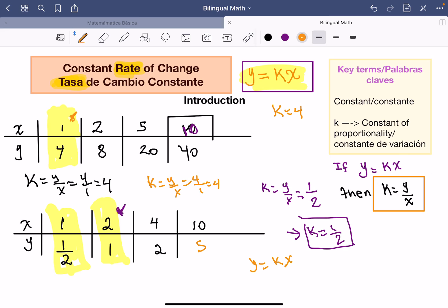Pero ya sabemos que la k es igual a 1 medio, por lo tanto, y es igual a 1 medio por 10 o 10 sobre 1, esto es igual a 10, 1 por 10 es 10 y 2 por 1 es 2, y esto es igual a 5.